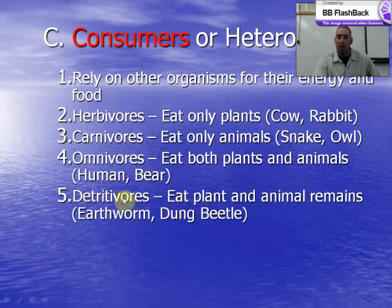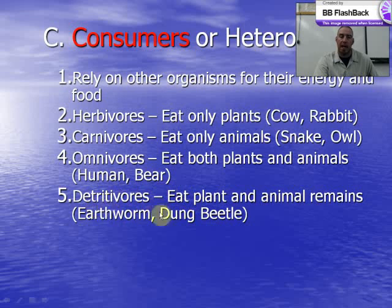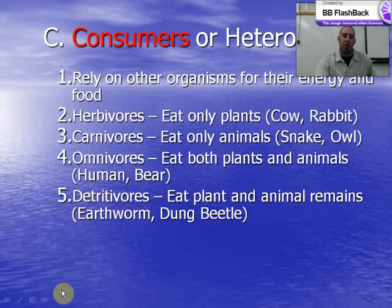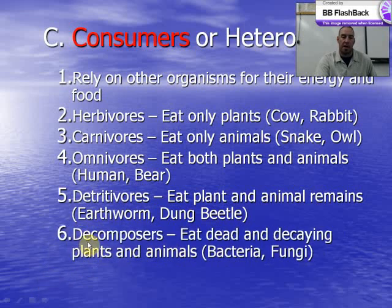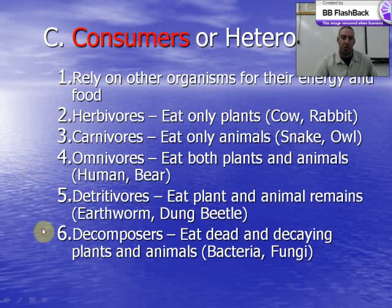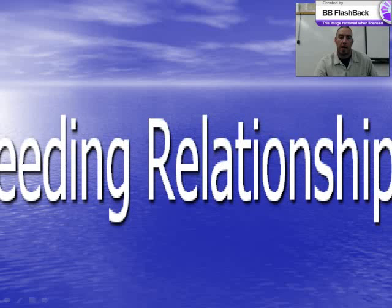The next type is a detritivore. They feed on the dead remains of organisms — things like earthworms and dung beetles — and begin the decomposition process, eating what's called detritus, or material that has just died. Their close related friends the decomposers come in and finish the breakdown. All of these consumers form feeding relationships.